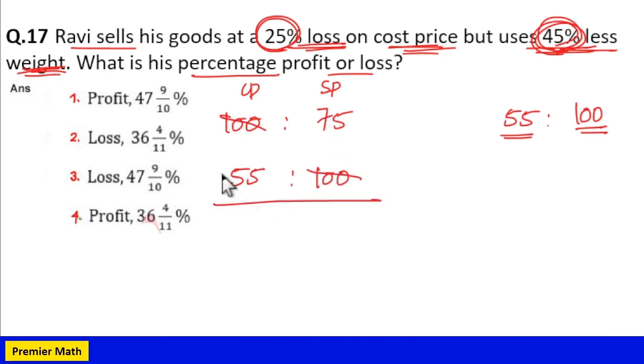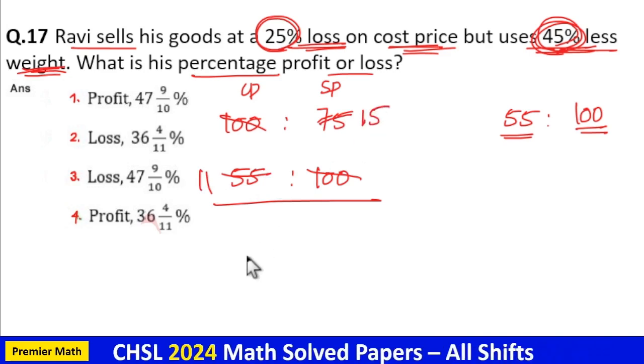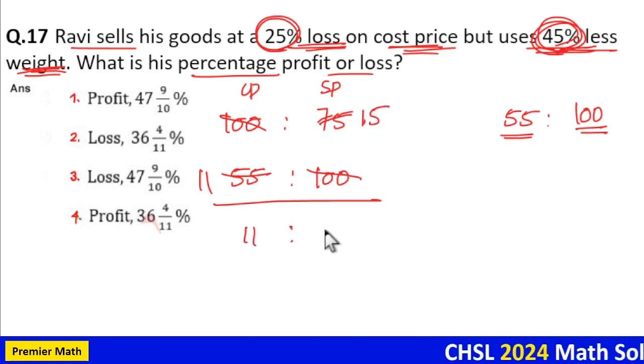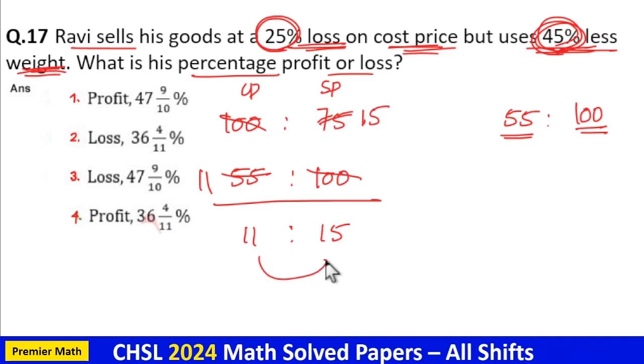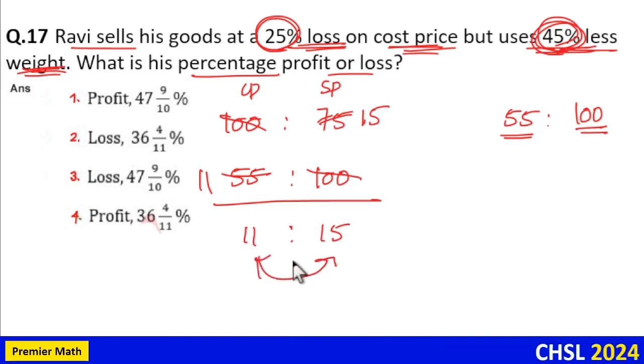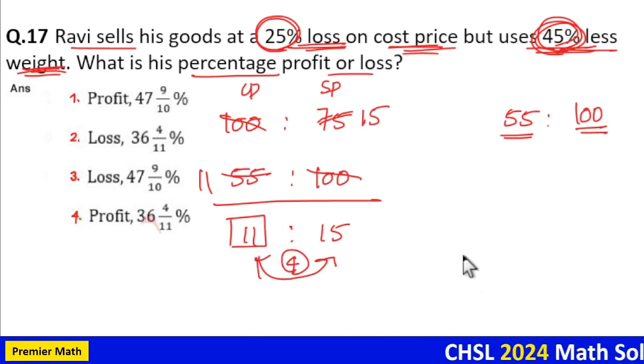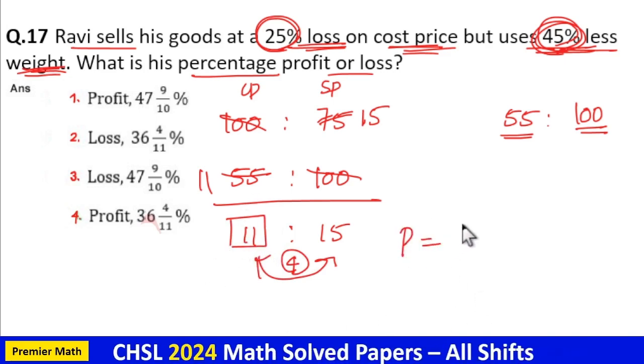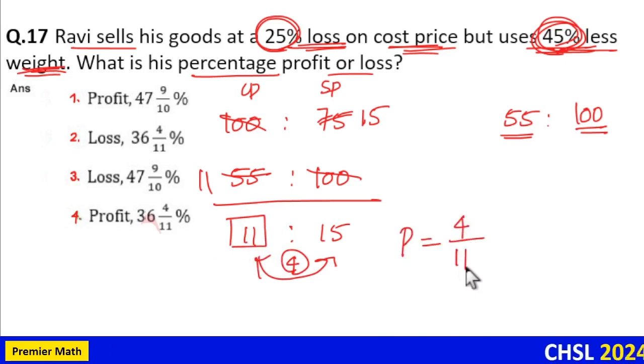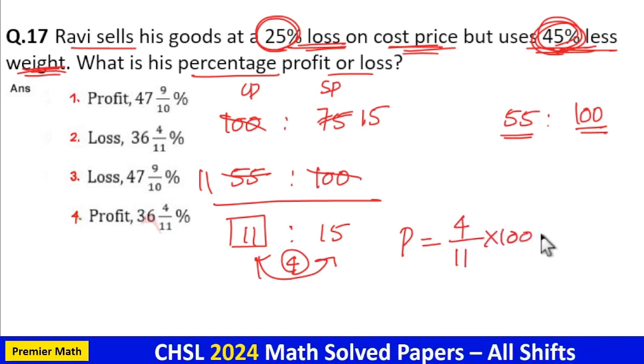Now take the ratio. 5 goes 11 times in 55, 5 goes 15 times in 75. So 11 and 15 is the cost price and sell price which means here 4 part is the gain out of this 11 part cost price. So profit equals 4 part gain from 11 part cost price into 100.